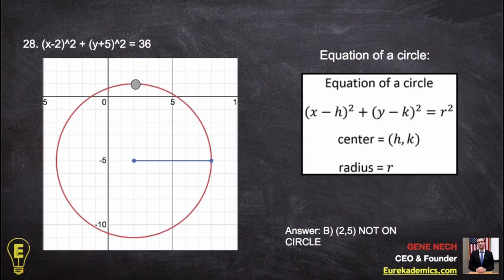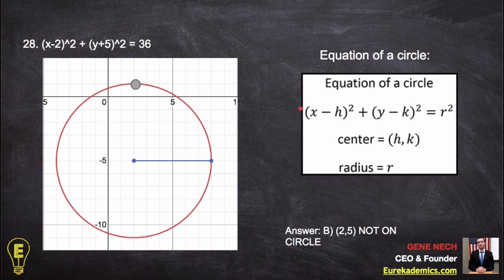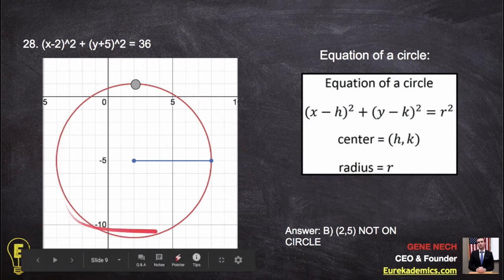Number 28 involves the equation of a circle. So you graph the circle, and they're asking us which dot is not on the circle. So the center is here because this negative 2 makes it positive 2, because the equation is minus h. This positive 5 makes it go down 5, and then you use a radius of 6, draw a circle. And then 2, 5, here's 2, and 5 is up here. So that's not on the circle.